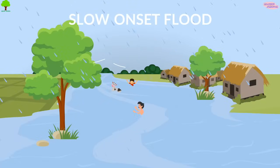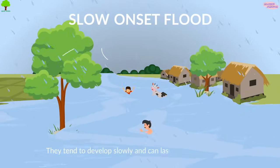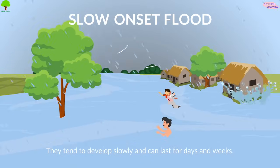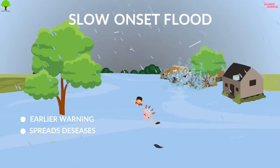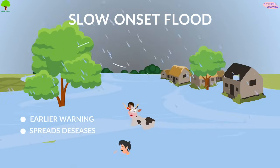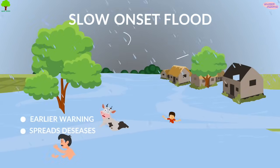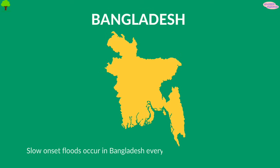Slow onset floods tend to develop slowly and can last for days and even weeks. This type of flood tends to give people time to move to higher ground. Slow onset floods occur in Bangladesh every year, causing many diseases.